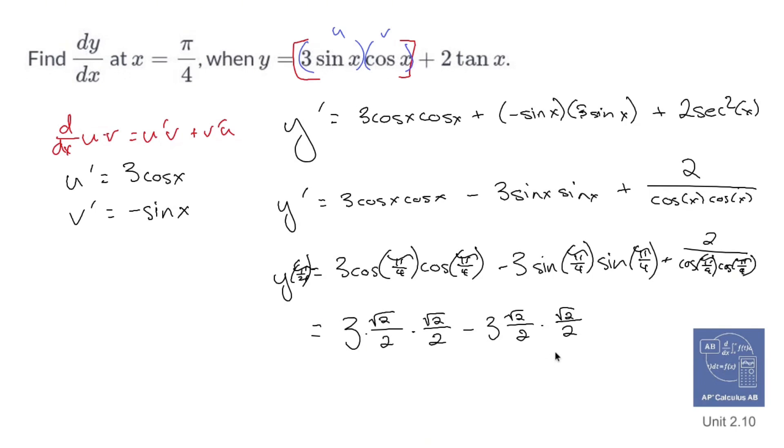Because you're thinking, oh man, I have to multiply all that. No, I don't. 3 times root 2 over 2 times root 2 over 2 minus 3 times root 2 over 2 times root 2 over 2 goes away. Because they're the same exact thing.